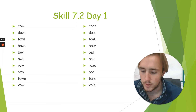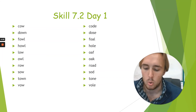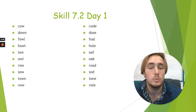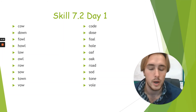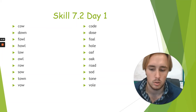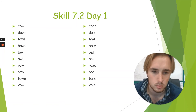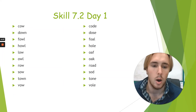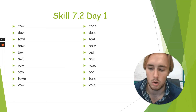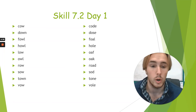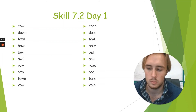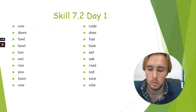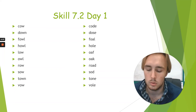I'm going to say some words. If you hear the OW sound in the word, say OW. If you don't hear OW, say no. Here we go: foul — dose — how — tone — oaf — down — owl — hole — raw — row — road — town — code — bow — bow — oak — cow — sod — low — bowl — sow — foal.